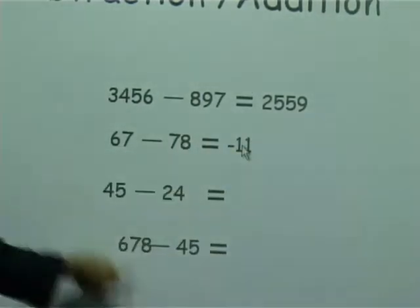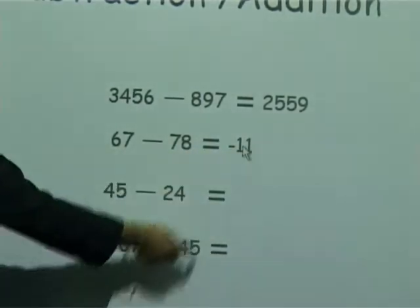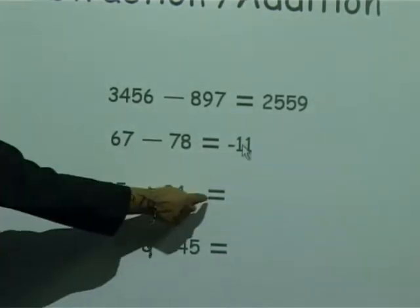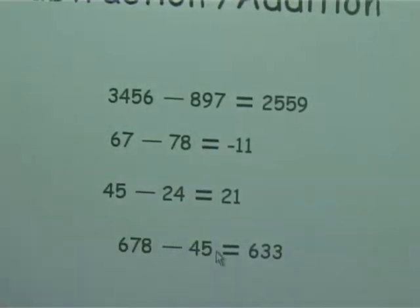Let's see the answers: 67 minus 78 equals minus 11, 21, and 633.